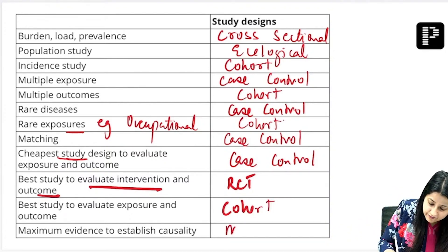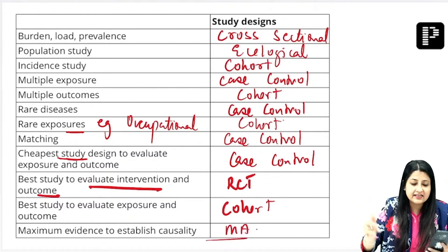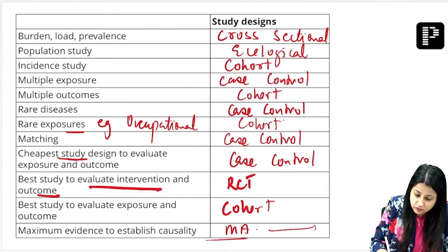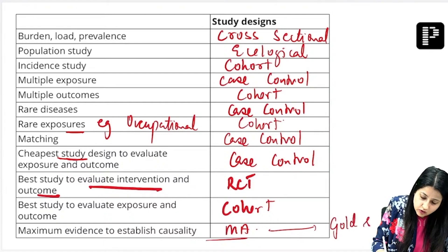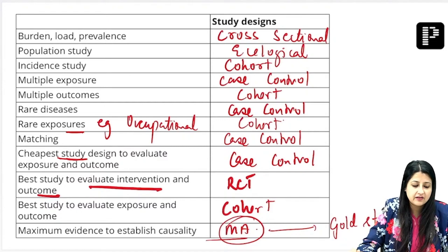Maximum evidence to establish causality comes from which one? Our very own meta-analysis. Got it? Maximum, the gold standard of evidence-based medicine. The gold standard of evidence-based medicine is meta-analysis. This is a very important chart for your exam.